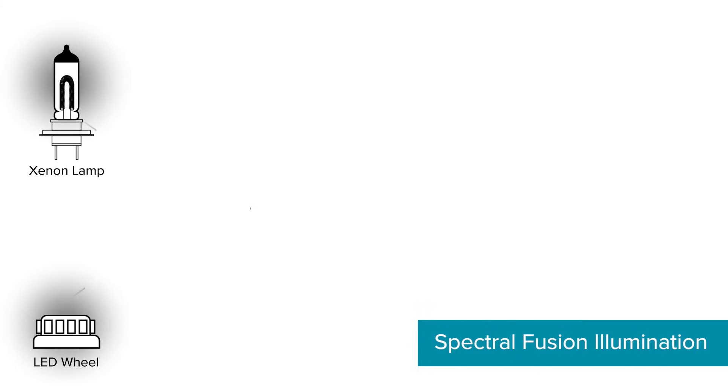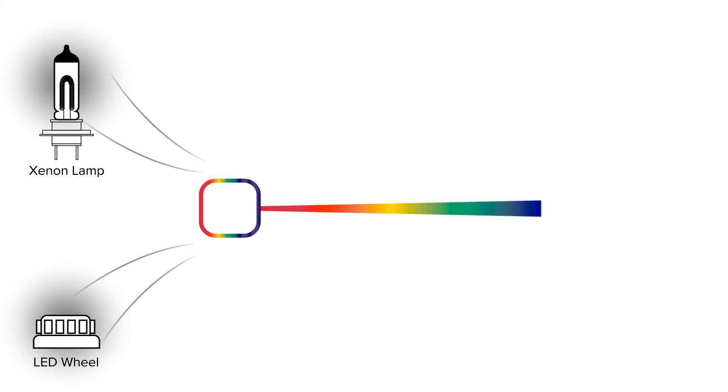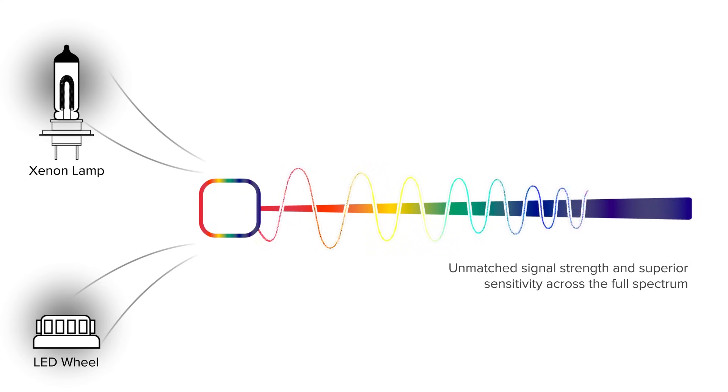Spectral Fusion Illumination combines a high-energy Xenon flash lamp and high-powered LEDs to provide unmatched signal strength and superior sensitivity for all visible range fluorophores.